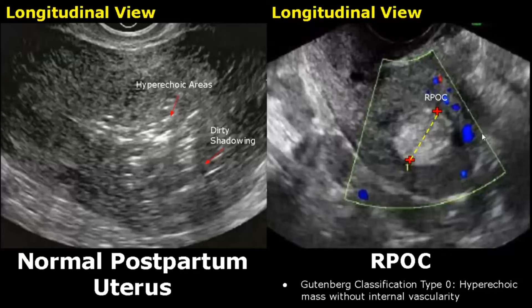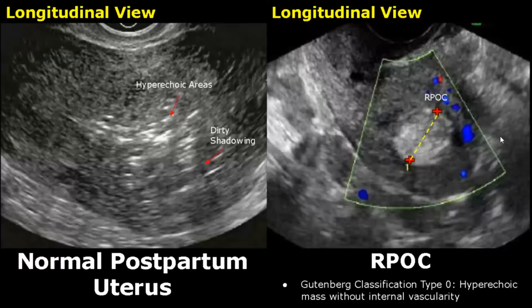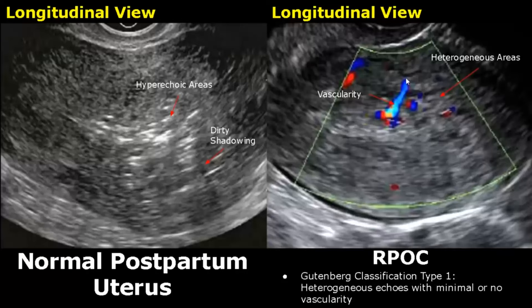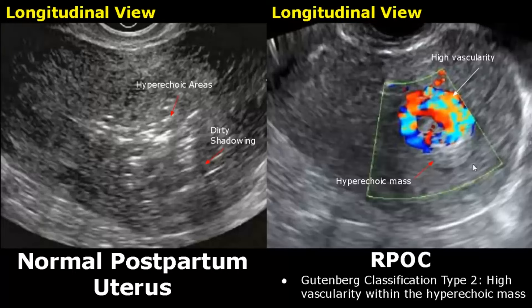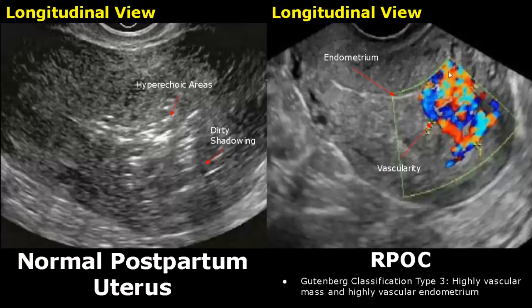RPOC can be classified based on Doppler analysis — this classification is called the Gutenberg classification. Type 0 RPOC is a hyperechoic mass without any internal vascularity and no Doppler signal within the mass. In type 1 RPOC, heterogeneous echoes with minimal or no vascularity are seen. In type 2 RPOC, high vascularity is seen within the hyperechoic mass with no blood flow outside the mass. Type 3 RPOC has a highly vascular mass and highly vascular endometrium with large blood flow seen within the mass and in the endometrium.